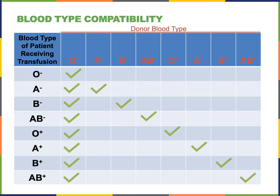A patient with A negative blood could receive O negative or A negative blood safely. A patient with B negative blood could receive O negative or B negative blood safely. A patient with AB negative blood could safely receive O negative, A negative, B negative, or AB negative blood; however, there would be a risk of a transfusion reaction if they received blood containing the D antigen. A patient with O positive blood could safely receive O negative or O positive; however, if they received a transfusion with the A or B antigens, that would cause a transfusion reaction. A patient with A positive blood can receive O negative, A negative, O positive, and A positive blood safely; however, they would have a transfusion reaction if given B negative, AB negative, B positive, or AB positive.